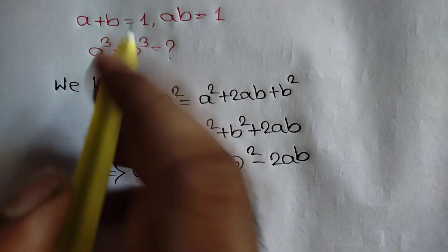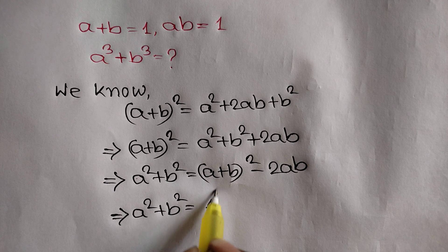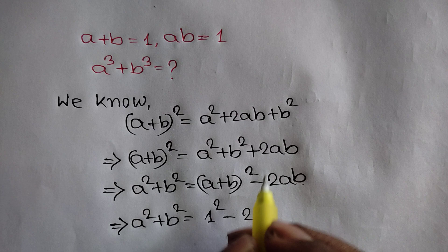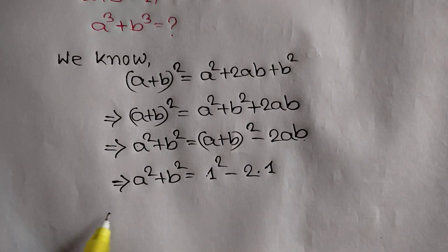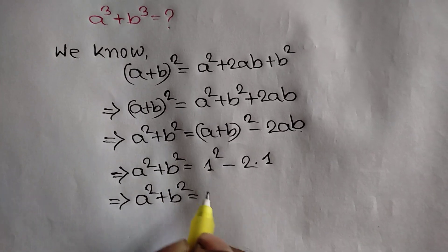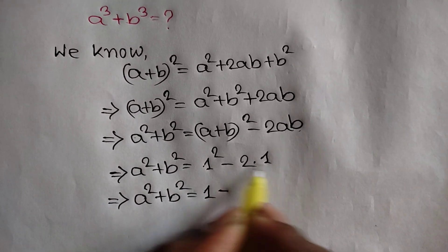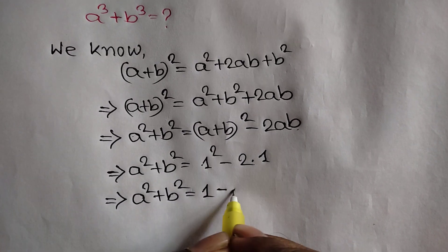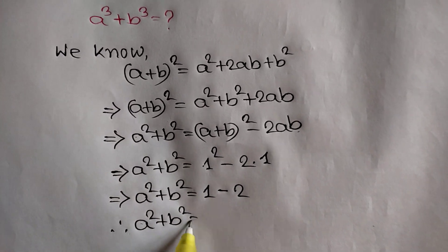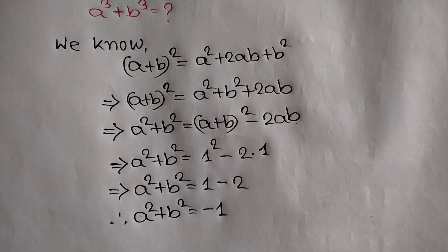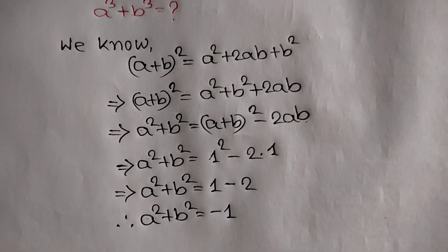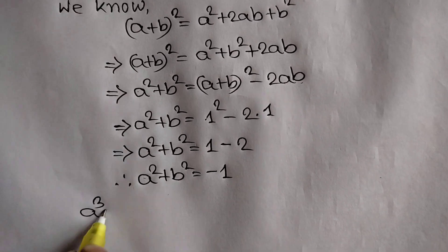Now, a plus b is equal to 1, so a square plus b square is equal to 1 squared minus 2 times ab. Since ab is equal to 1, that means 1 minus 2 times 1, which equals negative 1. So the value of a square plus b square is equal to negative 1.